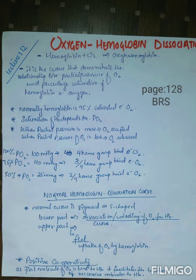As we studied in past videos, the partial pressure of oxygen in the external environment is 160 mmHg, in the alveoli it is 100 mmHg, and in the systemic blood it is 40 mmHg. Where the partial pressure of oxygen is very high, oxygen will rapidly bind with hemoglobin. Where the partial pressure of oxygen is low, oxygen will automatically be released from hemoglobin.